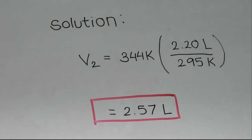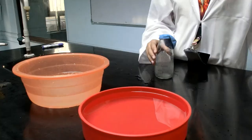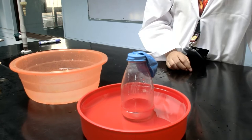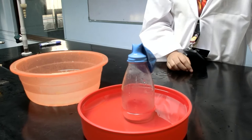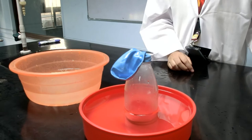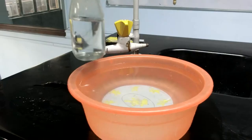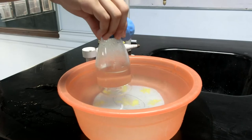One experiment can demonstrate the principles of Charles' Law. Place a bottle with a balloon on its opening in the middle of a container with hot water. Observe. Now place the bottle with a balloon in a basin with ice water. Observe the changes.